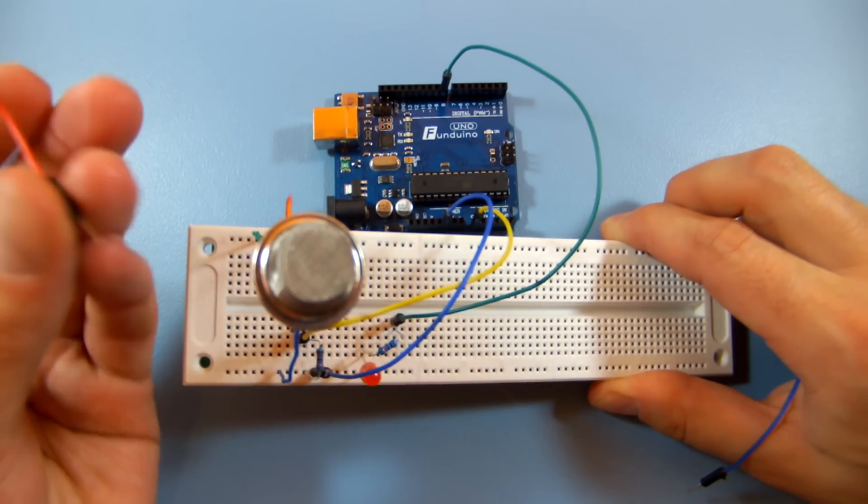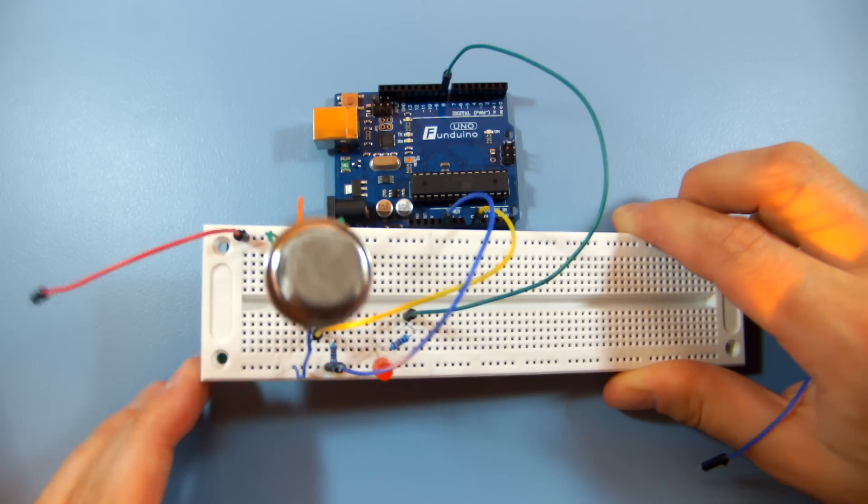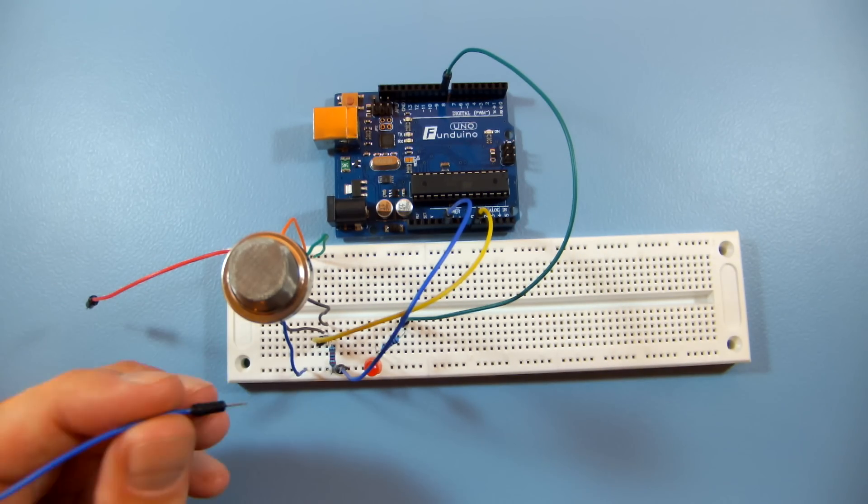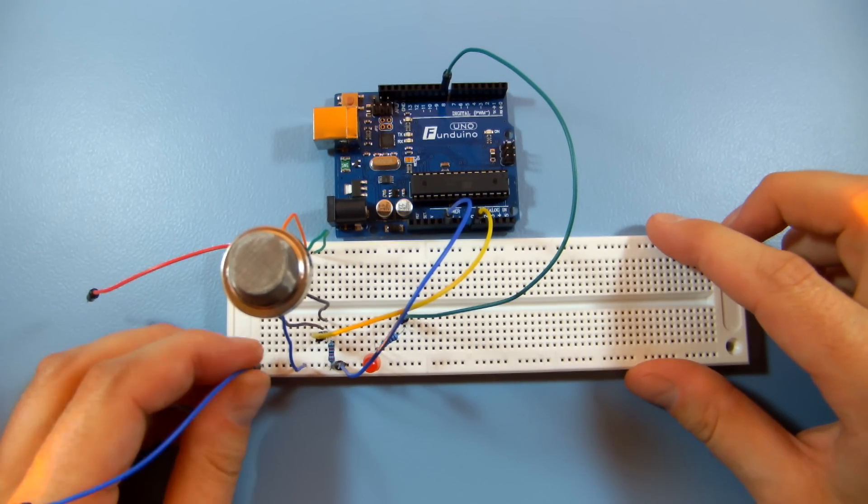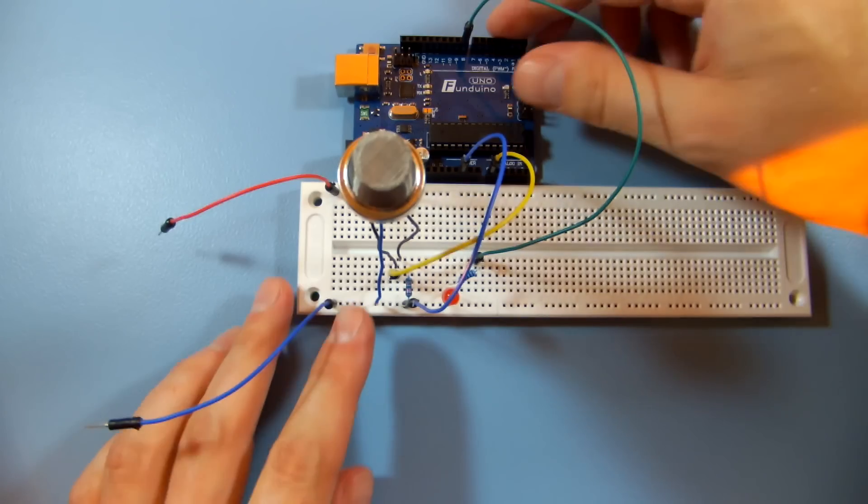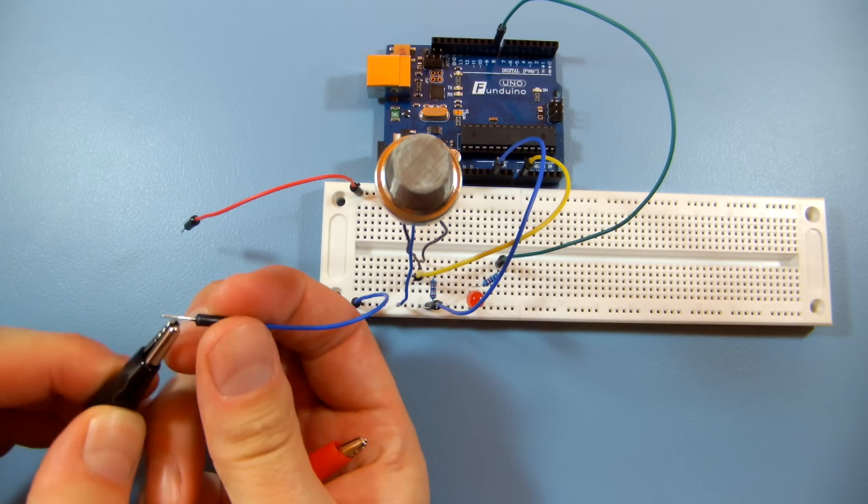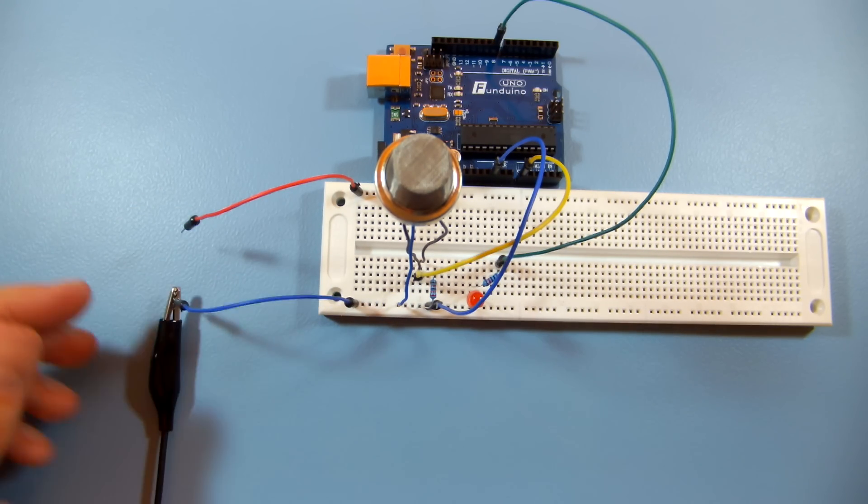Connect a jumper wire to the positive rail on your breadboard and another one to the ground rail. Hook up your power supply to these jumper wires and the Arduino to your computer.